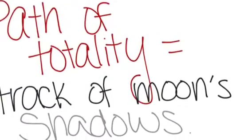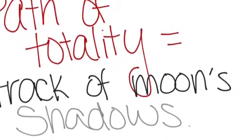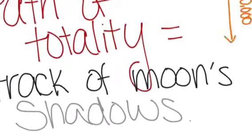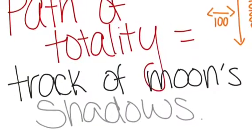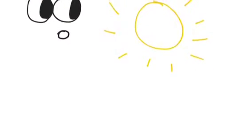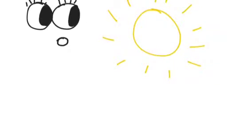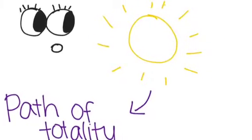The path of totality, which is the track of the moon's shadow across Earth's surface, is 10,000 miles long and 100 miles wide. In order to see the sun in full eclipse by the moon, you have to be in the path of totality.